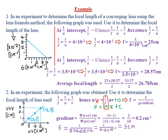From our previous class, we analyzed this graph. We said that if you rearrange the lens formula — 1/f = 1/u + 1/v — you can derive that u + v = (1/f) × uv. This relationship aligns with the graph: u + v is on the y-axis and uv is on the x-axis. Comparing with the straight-line equation y = mx + c, the gradient m corresponds to 1/f.